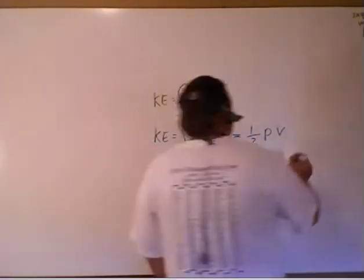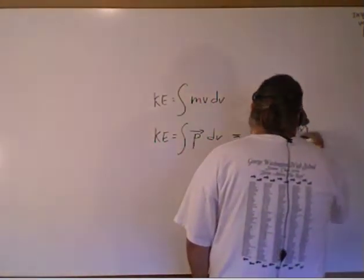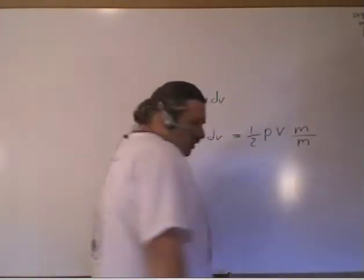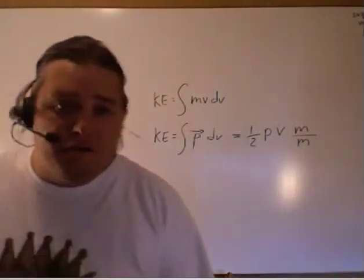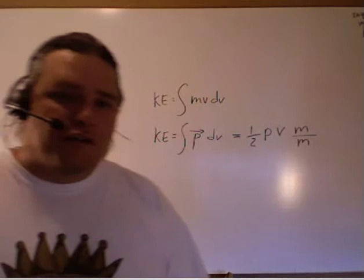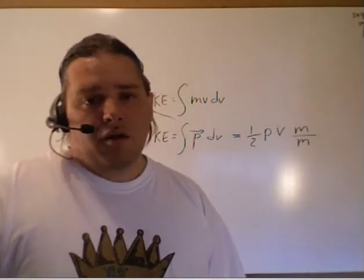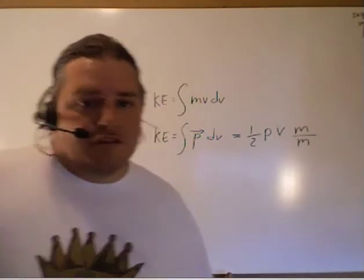So what we're going to do is we're going to introduce one. We're going to multiply my system by one. m over m is nothing more than one. I can multiply anything by one as many times as I want to. In this case, I'm only going to do it once.